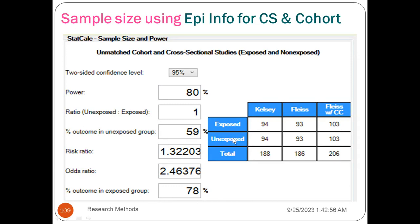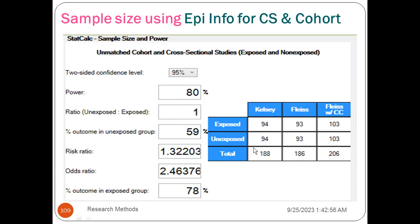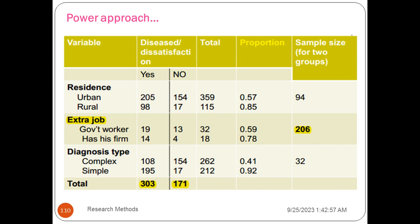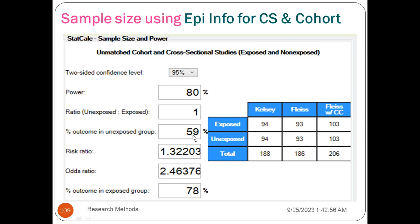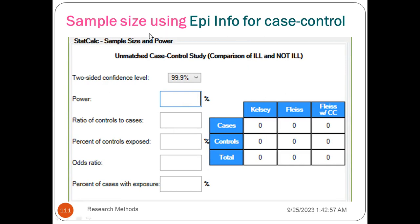If you have an exposed group, you can see that 0.75. If you have a cross-section, you can see that 0.75. If you have a sample size, you can use the sample size using the cross-sectional code, and you can use the sample size calculation using OpenEpi.